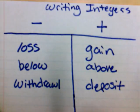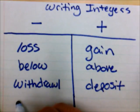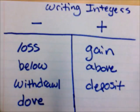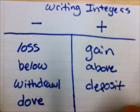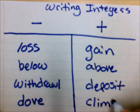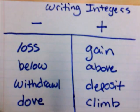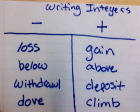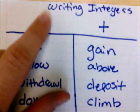Maybe just one more set. We have loss and gain, below and above, withdrawal and deposit. You could also go with something like — this is from one of our notes — I dove into the water in the swimming pool, and then after diving I climbed out. So dive and climb. Those are just a couple more words. It's not going to be all of them — we know there's a ton of these — just a short list to help me write the integer.